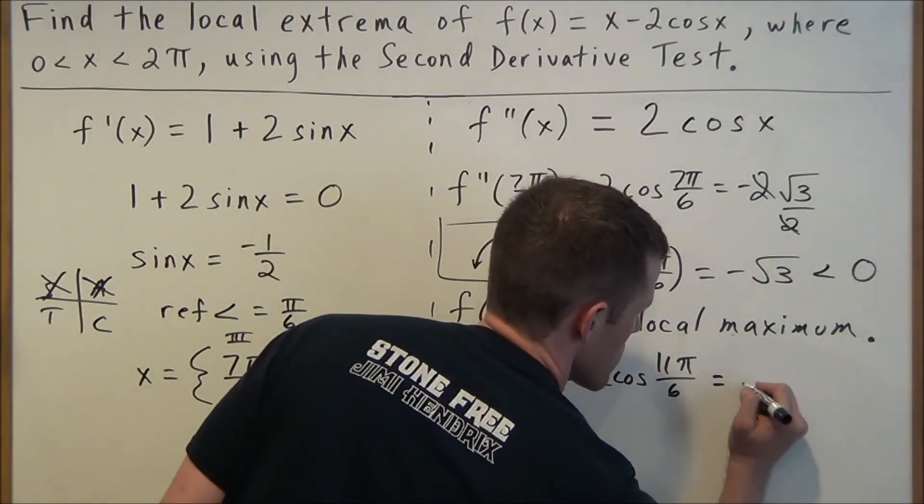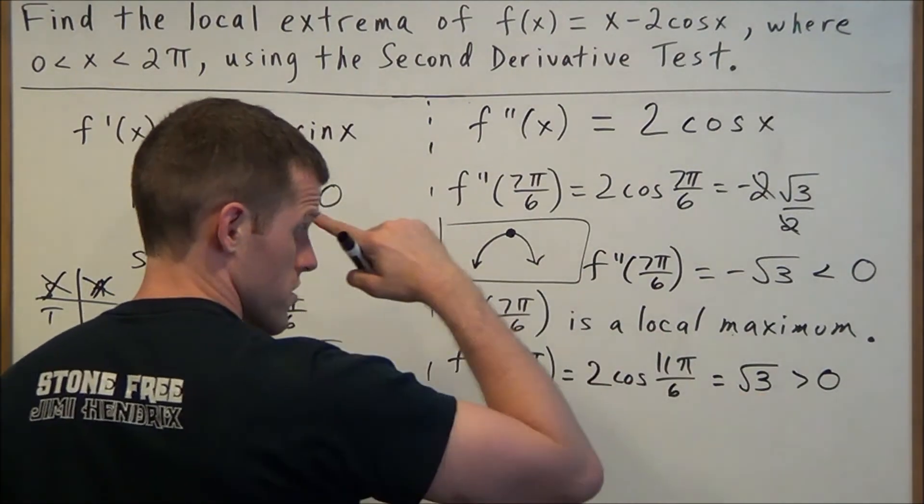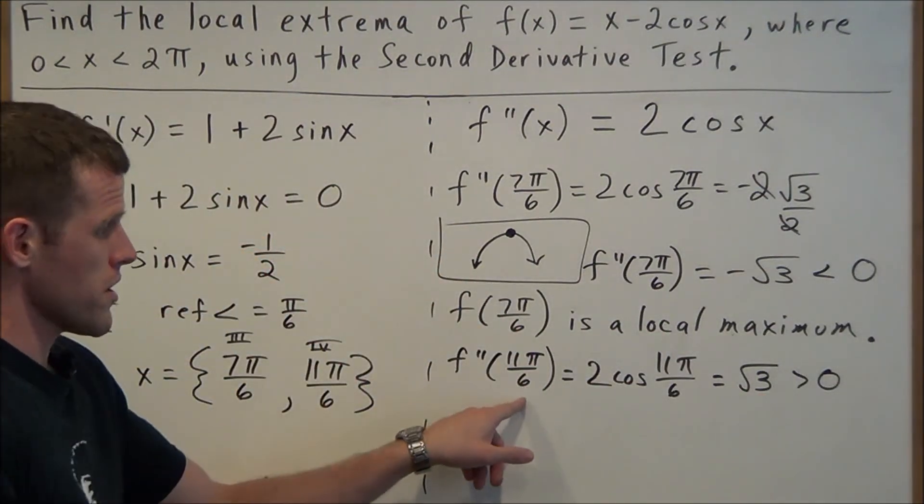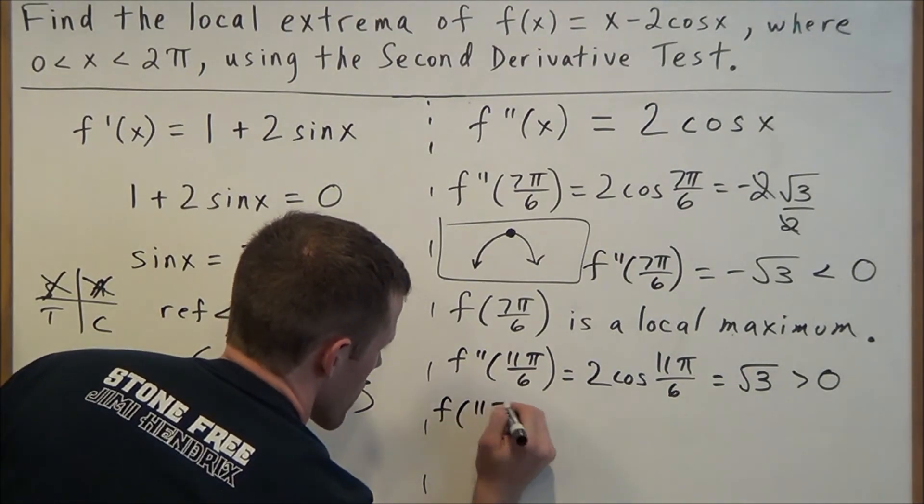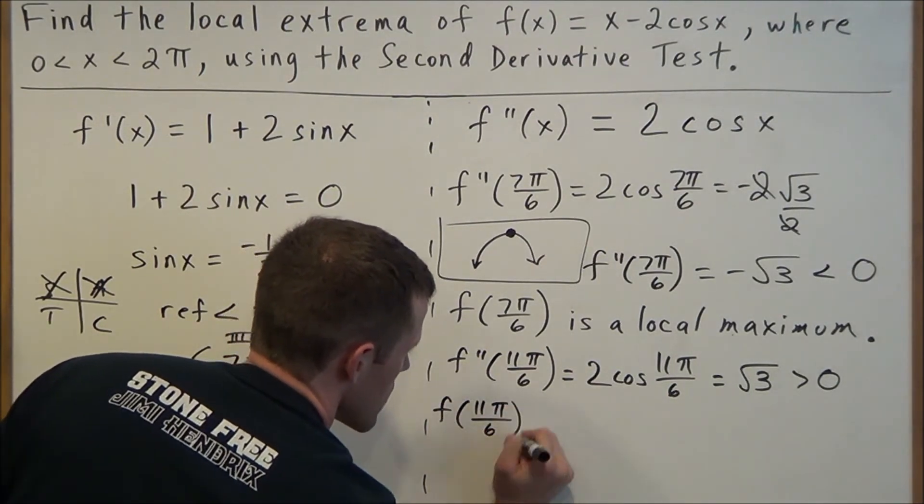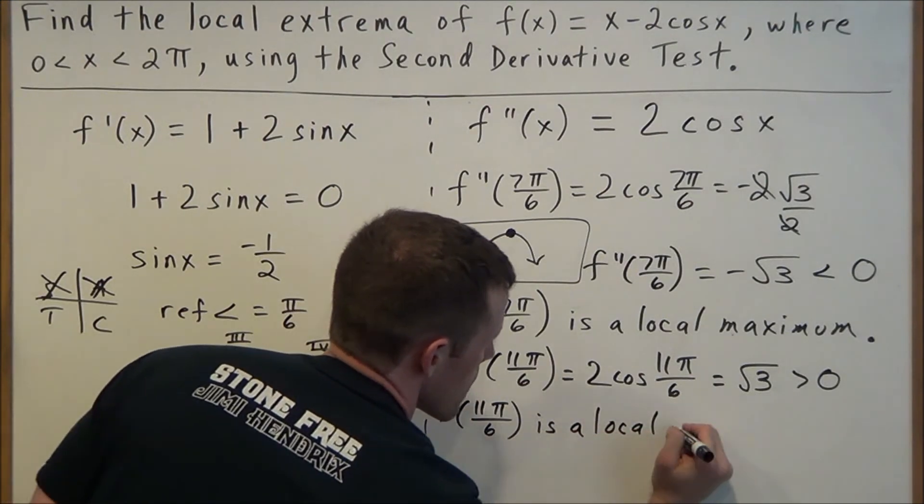So this is going to equal positive √3, which is greater than 0. So based on this result, since f''(11π/6) is positive, this tells us that f(11π/6) is a local minimum.